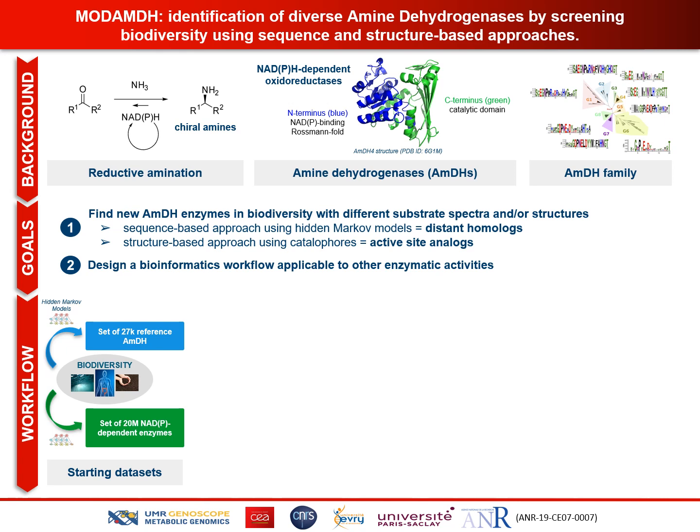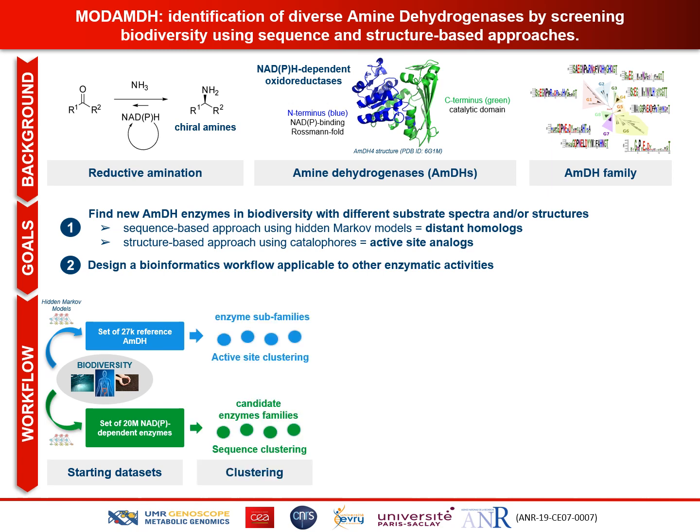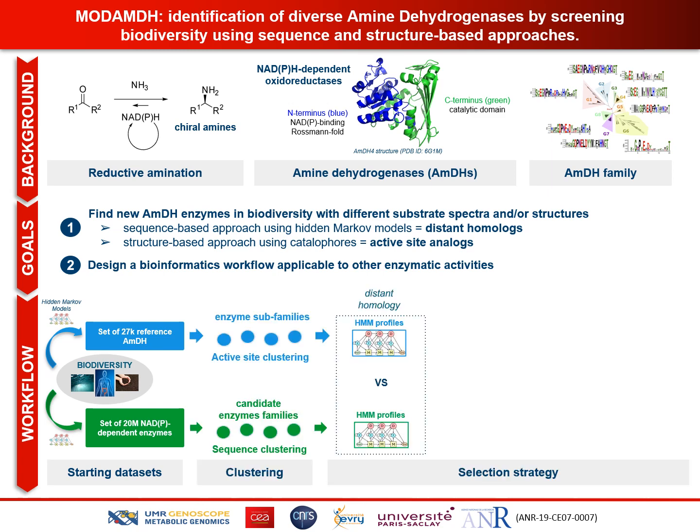The first set includes all available NADP-dependent enzyme sequences retrieved from genomic and metagenomic data, whereas the second one is an extended reference set already containing homologues of the AMDH family. Next, we clusterize each set, and our selection strategy starts by generating new HMM profiles for all new clusters to finally search for distant homologues by screening reference AMDH signatures in NAD enzyme signatures.